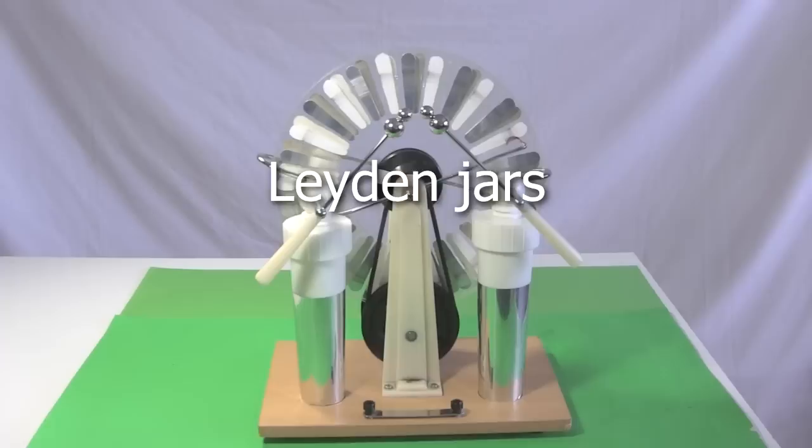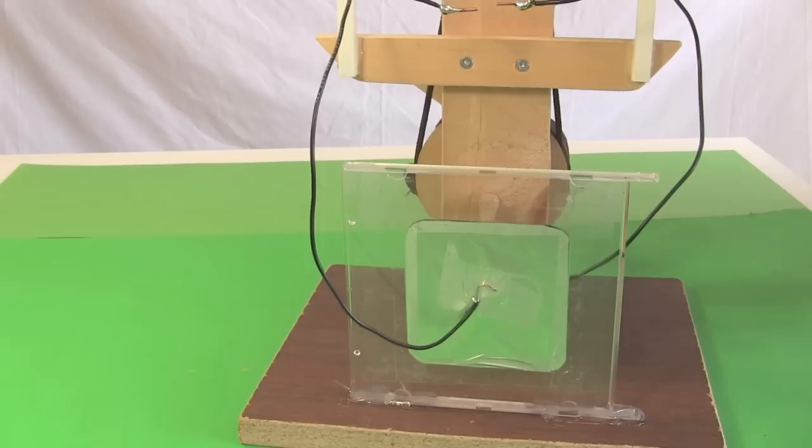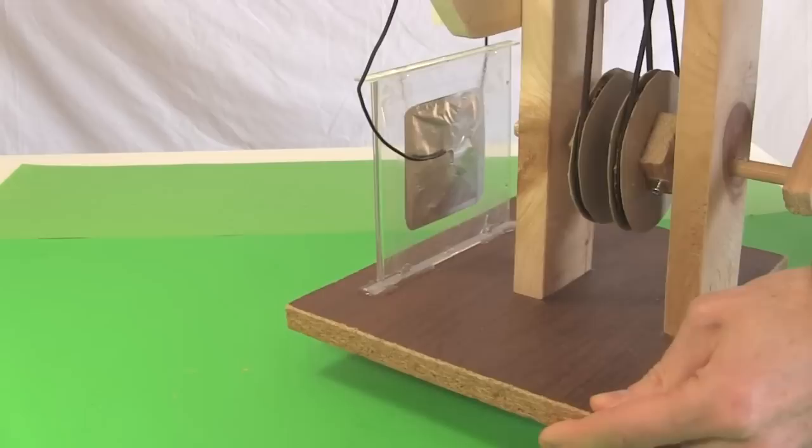Next comes the capacitor. On a bigger Wimshurst machine this is usually two Leyden jars, connected in series. But they're really just two capacitors. Leyden jar is just the original name for a capacitor. Since this is a small machine we don't need much capacitance.